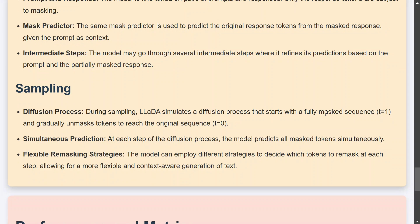During sampling, LADA simulates a diffusion process that starts with full mask sequence, that means everything is masked, and gradually unmask the token. Simultaneous prediction: at each step of the diffusion process, the model predicts all tokens simultaneously and flexible remasking strategies. You can use different remasking strategies. This is a little unimportant, so I'm just running through it. The core of LLDM was to understand how diffusion is used for text prediction.